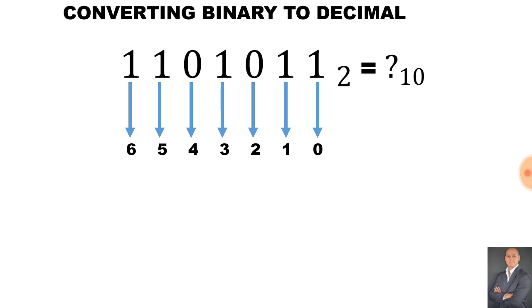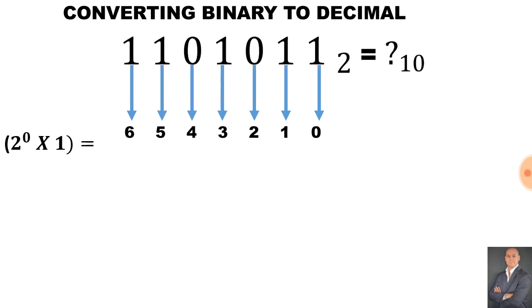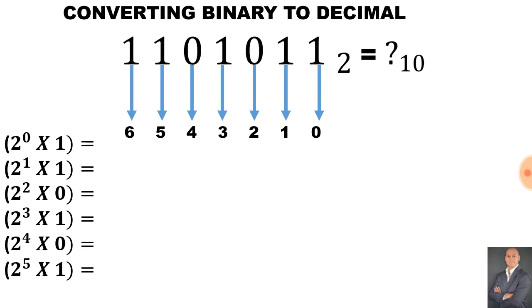Now in order to calculate the number for each one I say 2 to the power of 0 multiply by 1, 2 to the power of 1 multiply by 1, 2 to the power of 2 multiply by 0, 2 to the power of 3 multiply by 1, 2 to the power of 4 multiply by 0, 2 to the power of 5 multiply by 1 and 2 to the power of 6 multiply by 1.